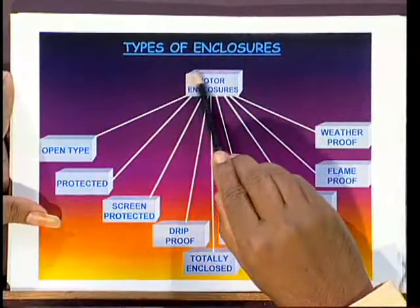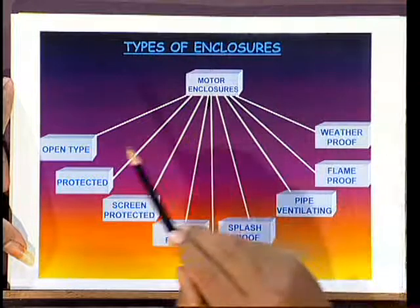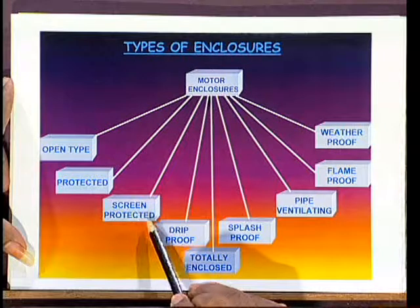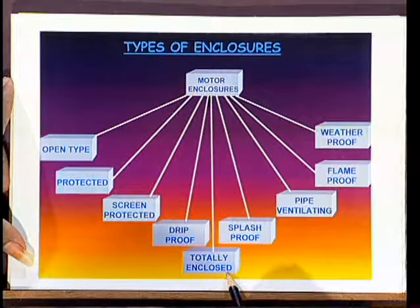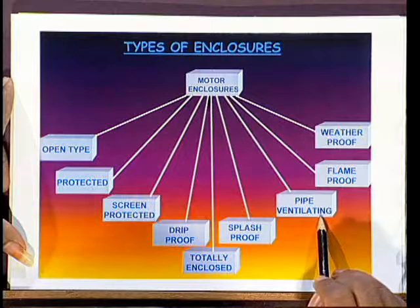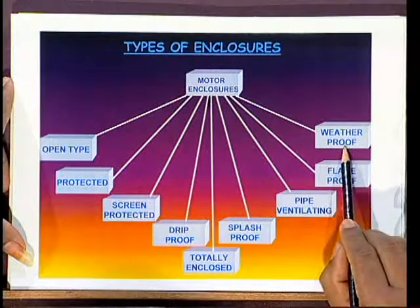Let us look at the different types of enclosures used in day-to-day life for different motors. The motor enclosures are classified into: open type enclosure, protected type enclosure, screen protected type enclosure, drip proof enclosure, totally enclosed enclosure, splash proof enclosure, pipe ventilating enclosure, flame proof enclosure, and weather proof enclosure.